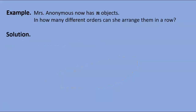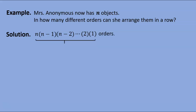Now let's do this abstractly. Suppose she has n objects — in how many ways can she arrange them in a row? She has n options for the first position. For the second, she has n−1 options, since she's already used one. For the next, n−2, and this pattern continues. By the time we reach the penultimate slot she has only two options, and just one for the last. This product of all whole numbers from n down to one comes up so frequently in mathematics — especially in combinatorics — that we have a special name and symbol for it. We call it n factorial, written with an exclamation mark. For example, 3! = 3 × 2 × 1 = 6, and 5! = 5 × 4 × 3 × 2 × 1 = 120.